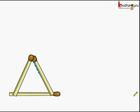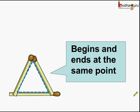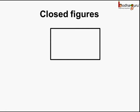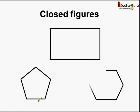Now, let us see this figure. This figure begins and ends at the same point. We started from here and it ended here itself. Or we could start from any other point and it will again end there only. Such figures which begin and end at the same point are called closed figures or closed curves. So, a rectangle, or a five-sided figure called a pentagon, or a six-sided closed figure called a hexagon — all these are closed figures as they begin and end at the same point.